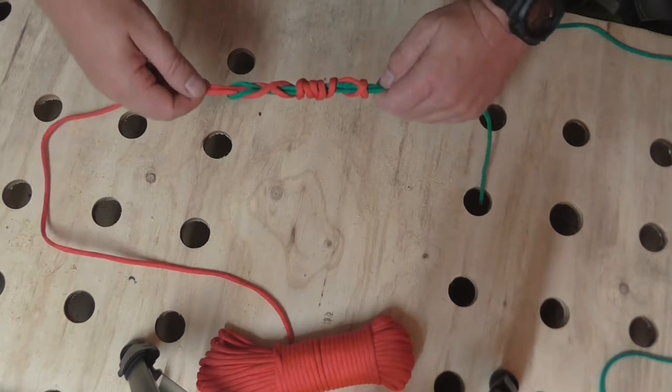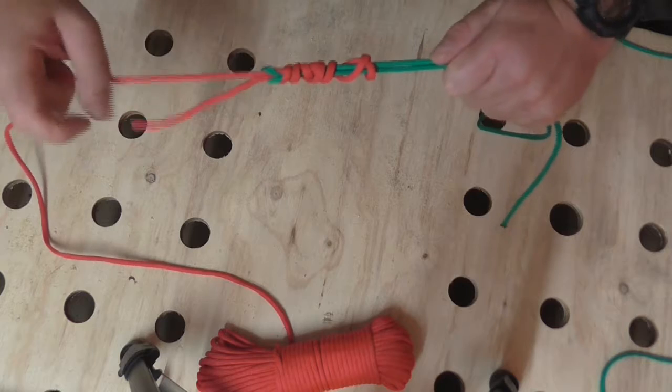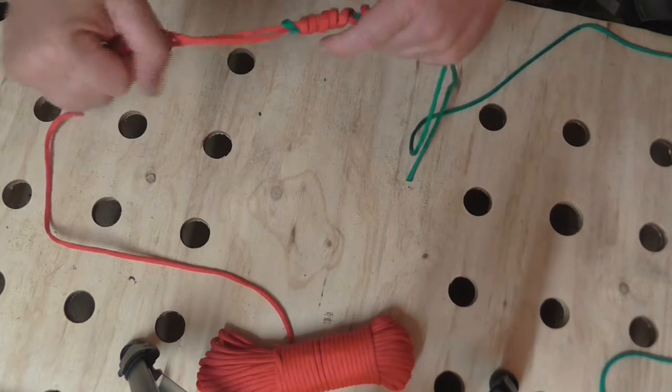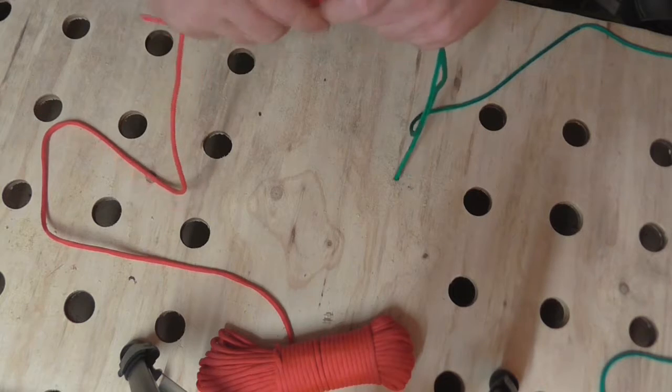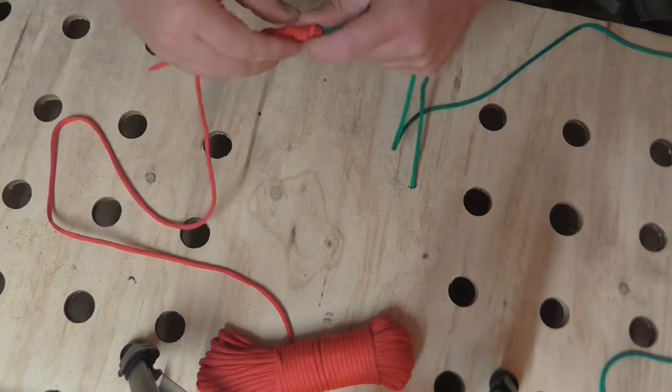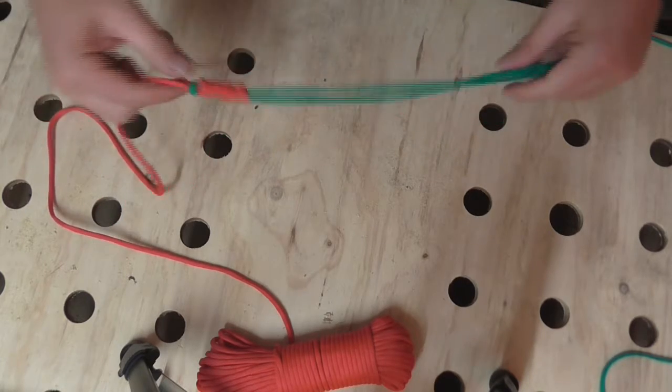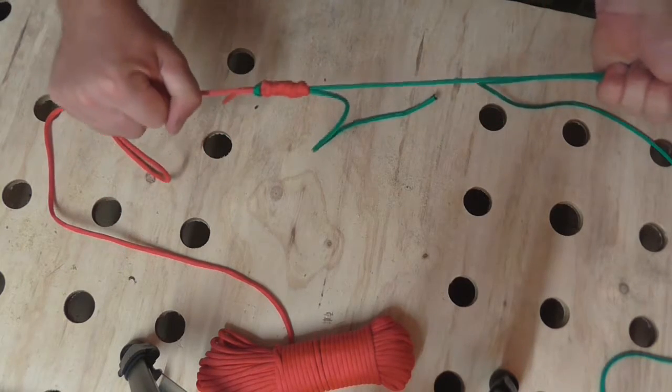And then all I'm going to do is pull the whole thing tight. Now, this isn't going to work quite as well with a paracord because you're going to get a much tighter knot with a monofilament and so on. But that's basically what you've ended up with, an incredibly strong knot.